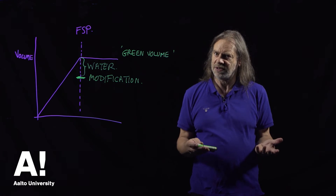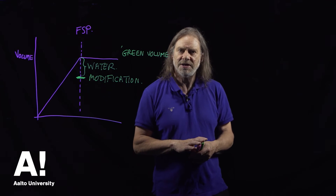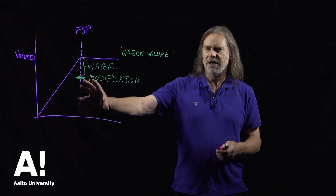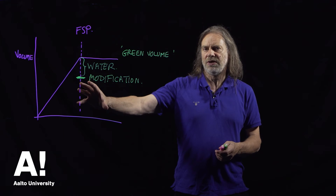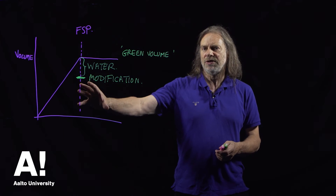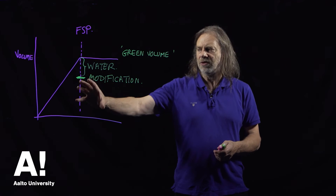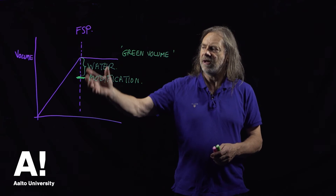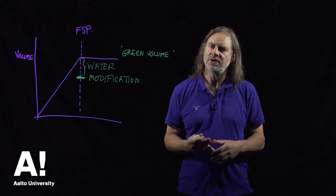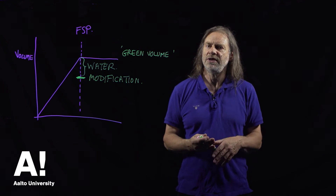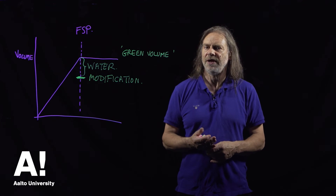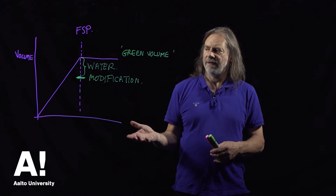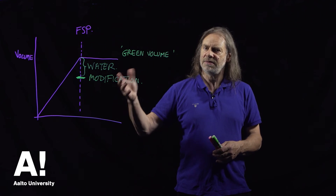One of the best ways to protect wood from decay is to keep it dry, and that's what these modification reactions are doing. The chemical modification and the impregnation modification are keeping the cell wall of the wood below that threshold value — keeping the wood dry. That's how they work. It's a completely passive mechanism.